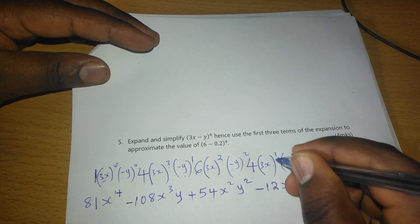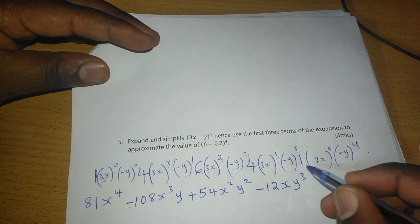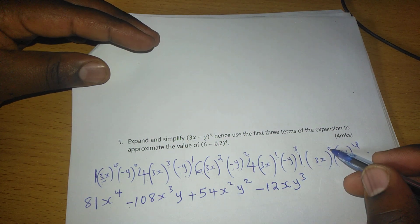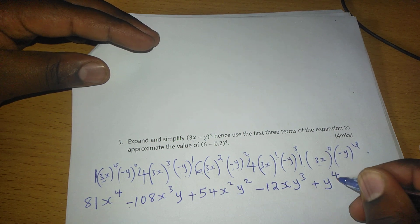x raised to 1, but y now is raised to power 3. And finally, we will have 1 multiplied by anything raised to 0 is 1. So we will have positive y^4. So that is the binomial expansion.